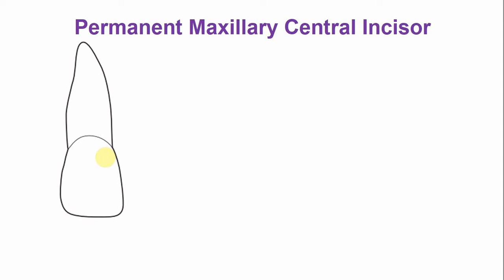In a mesodistal section, the top of the pulp chamber comprises three pulp horns. These pulp horns correspond to the mamelons that are present in a newly erupted incisor tooth. The pulp chamber follows the outline of the crown — it is widest at the incisal area and narrow at the cervical portion of the crown.